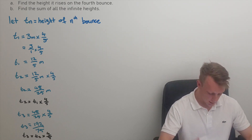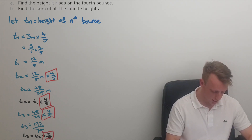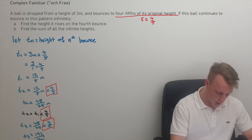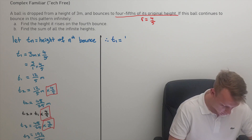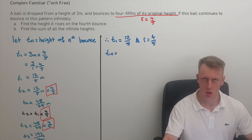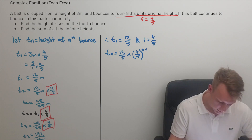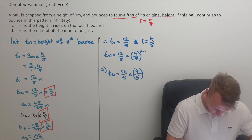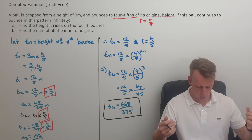The common ratio is four fifths, as given in the question. We know t(1) equals twelve fifths and r equals four fifths. Using the general term for geometric sequences — first term multiplied by the ratio to the power of n minus one — we can find the fourth term, t(4), by plugging in the values. For tech free arithmetic, just work out 12 times 64 and 5 times 5 times 75 the old school way.